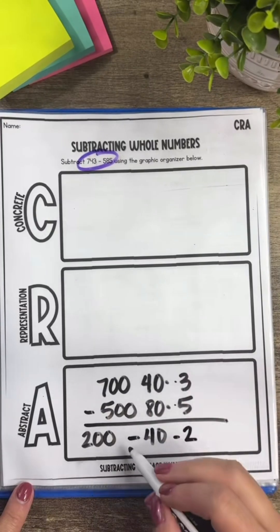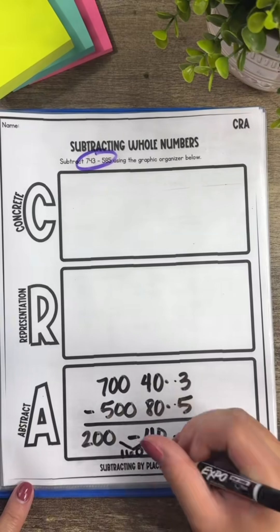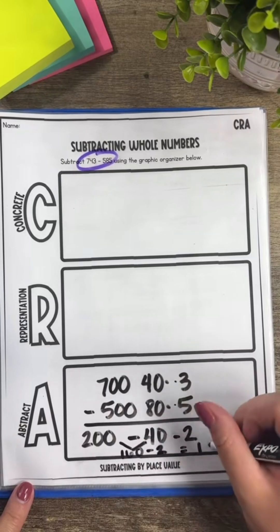Then that 200 minus 40 is 160, minus 2 we get that same difference of 158.